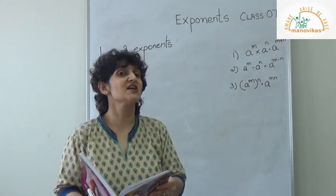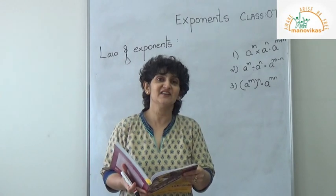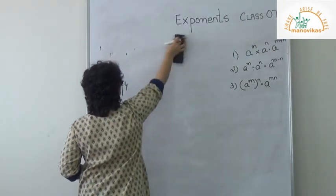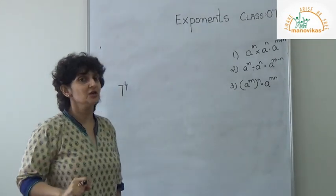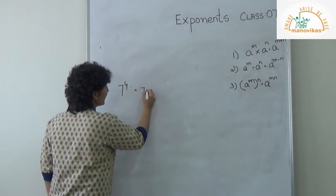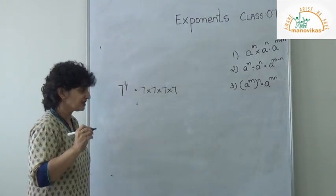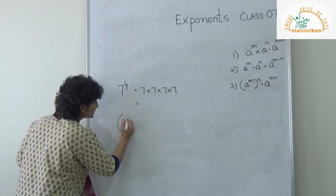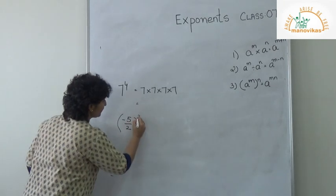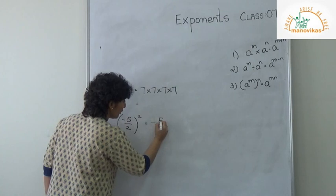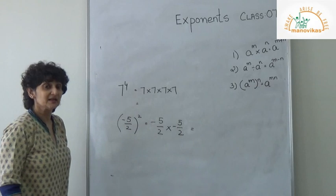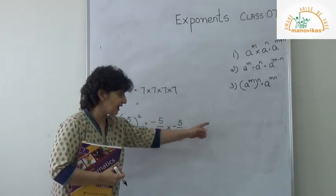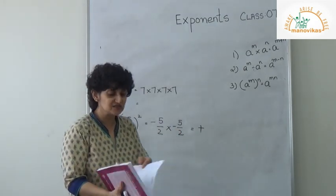Now please take out your textbooks to exercise 5a. Question 1 is evaluate 7 to the power 4. You know how to do these — evaluate means you need to find the value. So 7 to the power 4 means 7 into 7 into 7 into 7. Multiply and get back to me. Next, if you have minus 5 upon 2, the whole squared: minus 5 upon 2 into minus 5 upon 2. Minus and minus gives plus, and 5 into 5 gives 25 upon 4.